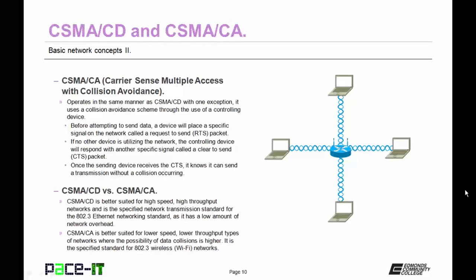Now let's talk about CSMA/CA, or carrier sense multiple access with collision avoidance. CSMA/CA operates in the same manner as CSMA/CD with one exception: it uses a collision avoidance scheme through the use of a controlling device. Before attempting to send data, a device will place a specific signal on the network called a request to send packet, or RTS packet. If no other device is utilizing the network, the controlling device will respond with a clear to send packet, or CTS packet. Once the sending device receives the CTS, it knows it can send a transmission without a collision occurring.